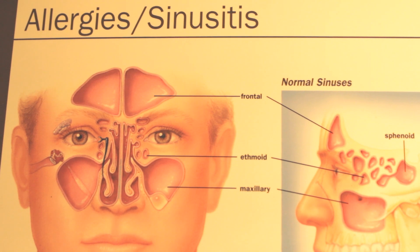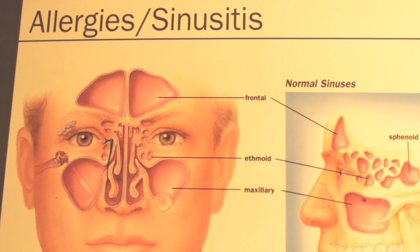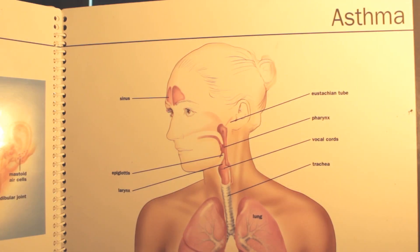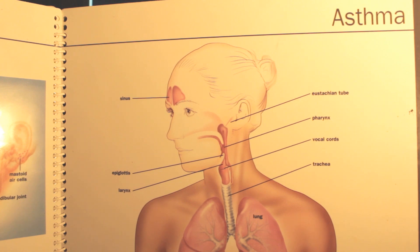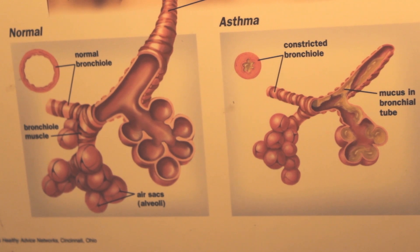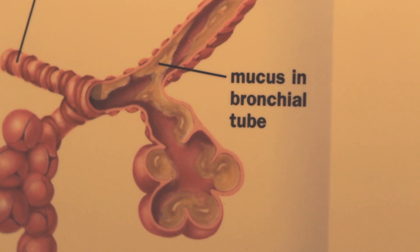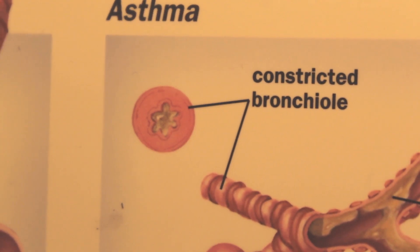Now let's address allergies such as sinusitis. Any time you see the suffix "-itis," you already know we're dealing with an inflammatory condition, and acid and mucus is the cause of such condition. Now let's address asthma, which is inflammation of the bronchial tube — even bronchitis. Here we have two illustrations of a normal bronchial tube and a bronchial tube that is asthmatic. The cause of the asthma is mucus, which stations itself in the bronchial tube and the lungs. Mucus is the cause.